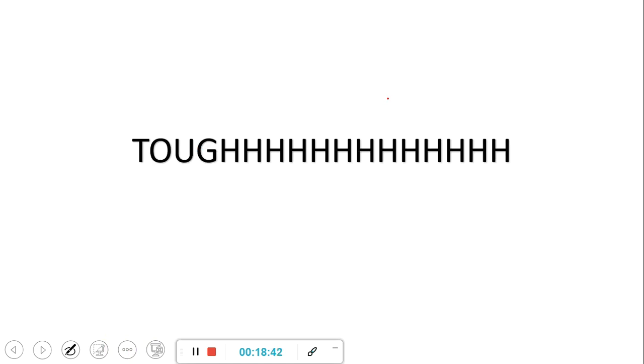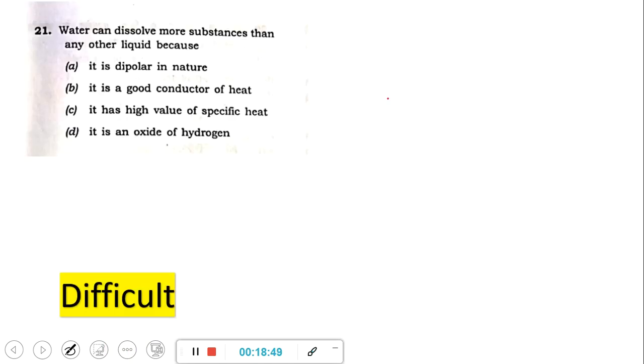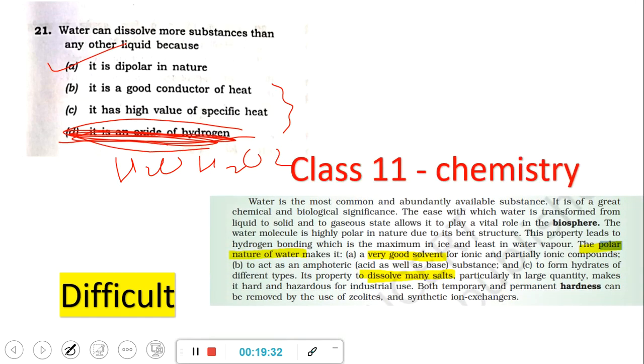Now the tough ones. Five easy questions are over, all five were solvable from our test series. Now the tough ones - some of half we can solve, half we cannot solve. Water can dissolve more substances than any other liquid. This also I think 95% of my students have done it correct because the options were easy. If you see last one - it is an oxide of hydrogen. There are many things which are oxide of hydrogen - H2O, H2O2, HO2 you can take anything. So just because it is an oxide of hydrogen that doesn't mean water has some special power. So D is gone. Now these two, if you see both are talking about heat - it is a good conductor of heat, it has high value of specific heat. This again is not deciding whether water is a solvent or it can mix certain things. So with that common sense or with the elimination technique you can tell this.